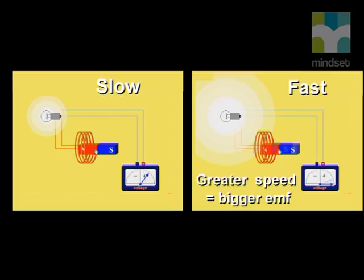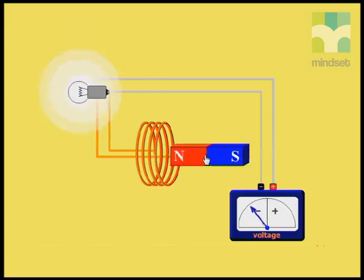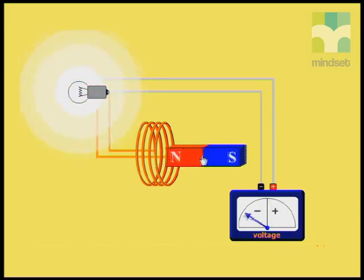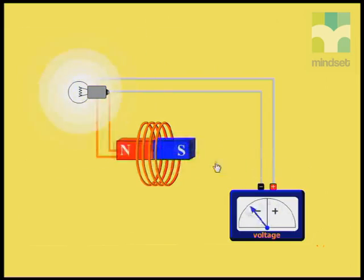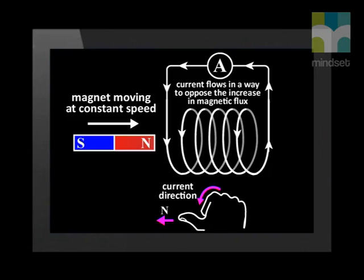Electromagnetic induction occurs when a changing magnetic field induces an EMF and a current in a conductor. The induced current depends on the speed of movement of the magnet relative to the conductor, the magnetic flux density, and the number of turns in the solenoid. The induced current flows in such a direction that its magnetic field opposes the changing magnetic field that induced it. The right-hand solenoid rule can be used to determine this induced current direction.